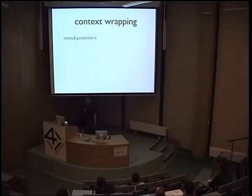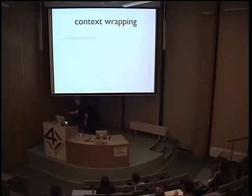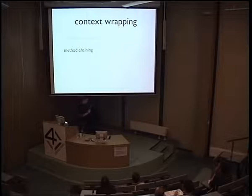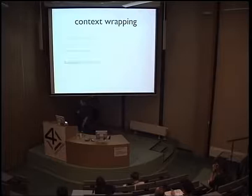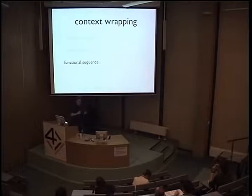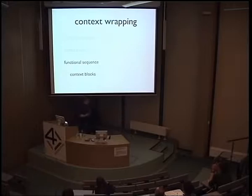The different ways to supply context include: nested parameters, which is what we used in the stopping and finishing problem example — where rules.add took a nested parameter to handle all those cases; method chaining, which is how we built the stateless discount and profile objects, using the dot to supply context between subsequent calls; and functional sequence, like when we said 'recipe consists of' and then add, add, add — using a closure block to supply context for each call. You can also use a context block, or another way is with something called a sticky attribute.